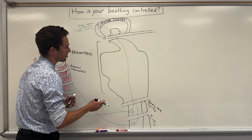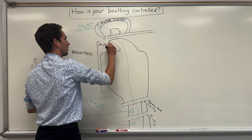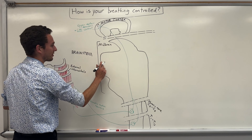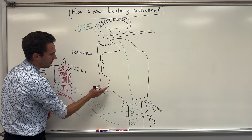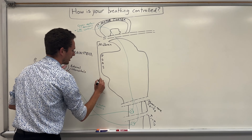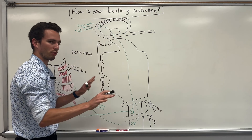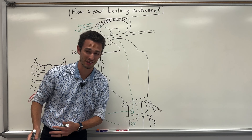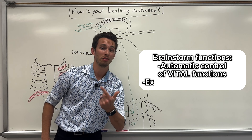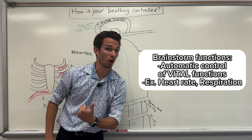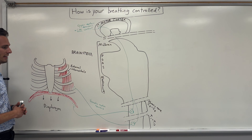The brainstem consists of three main parts. The top part, or most superior, is called the midbrain, which we won't talk about much in this video. Then we've got the pons, and below that the medulla oblongata — I'll shorten it to medulla. Big picture with the brainstem: if you need to answer a question on a test, the brainstem deals with the automatic vital functions of your body — think regulating heart rate and regulating breathing.